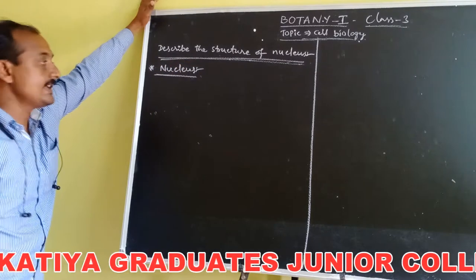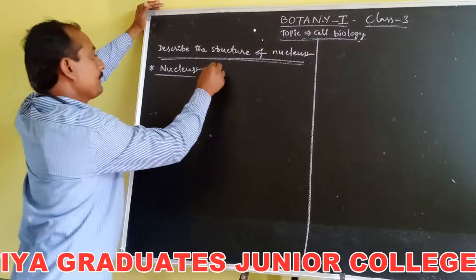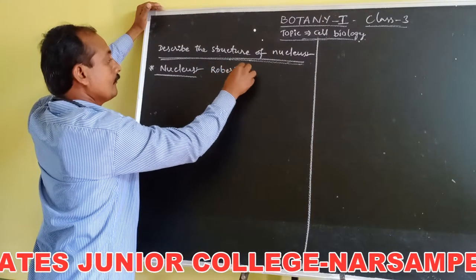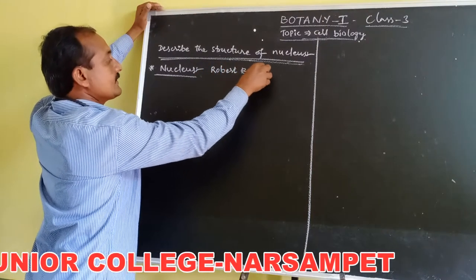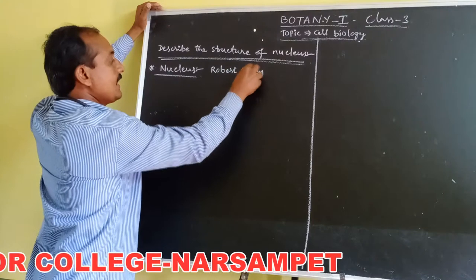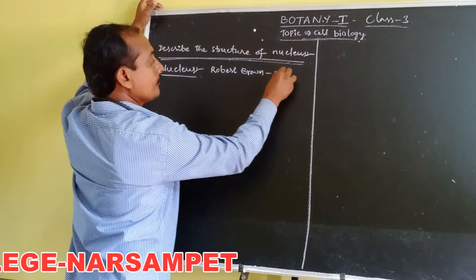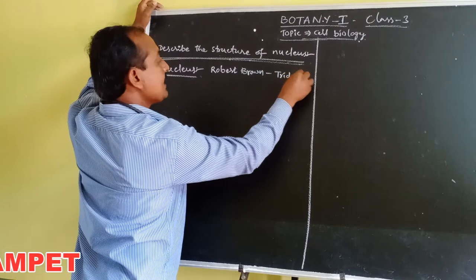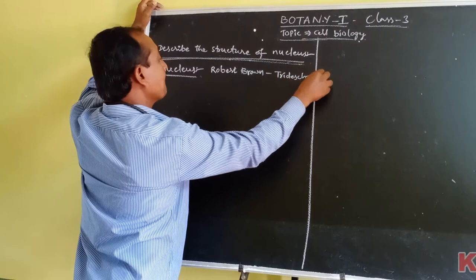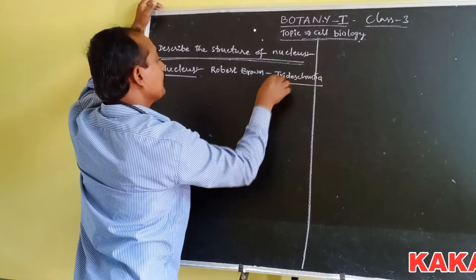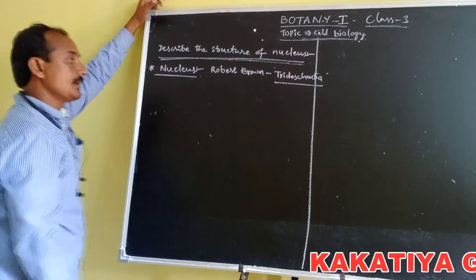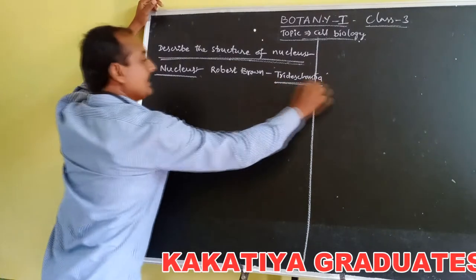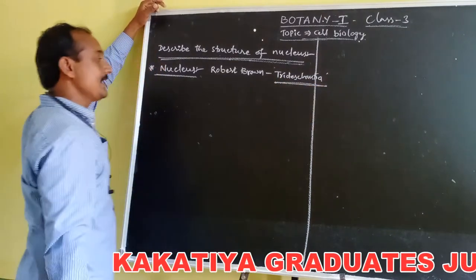The nucleus was discovered by Robert Brown. The plant used was Tridescantia. Robert Brown discovered the nucleus in Tridescantia.